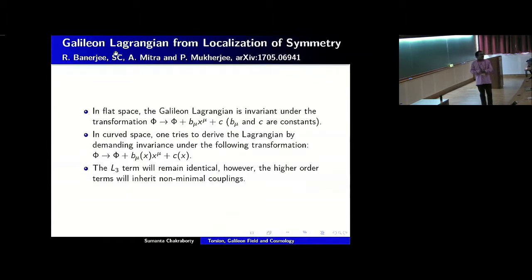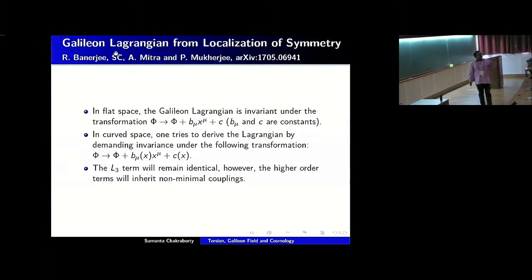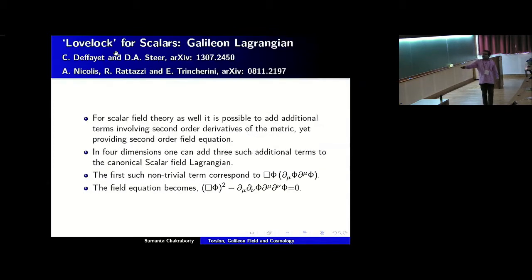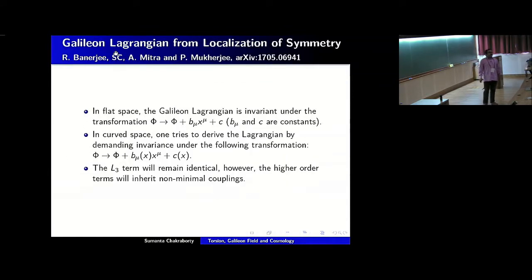There is another way to motivate this. In the context of flat spacetime, the Lagrangian is invariant — the two Lagrangians can only differ by a total derivative — if you make the transformation φ → φ + b_μ x^μ + c, where b_μ and c are constants. You can either replace η_μν with g_μν to go to a curved-space Lagrangian, or demand invariance under this localized transformation, which also leads to the exact Galileon term. The only difference is that for the higher-order terms, they will involve non-minimal coupling, because the commutator of covariant derivatives is not zero in curved spacetime — it depends on the Riemann tensor — and from there you get the non-minimal couplings.